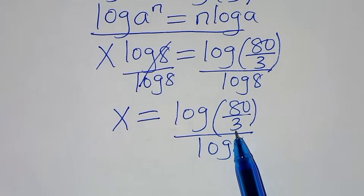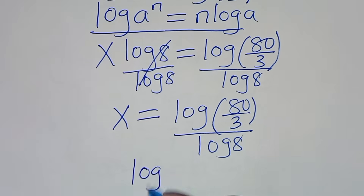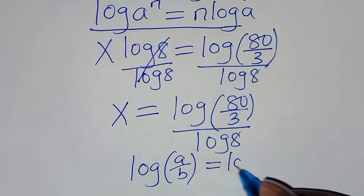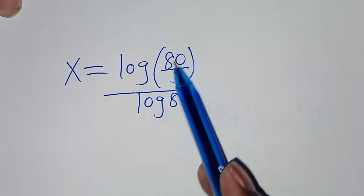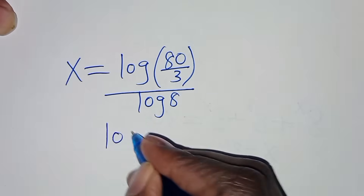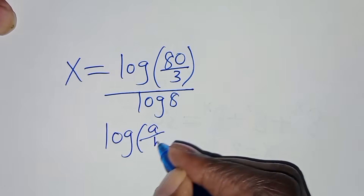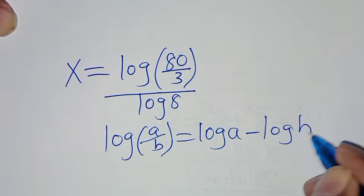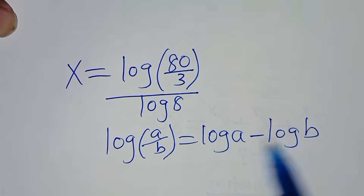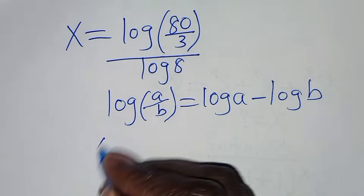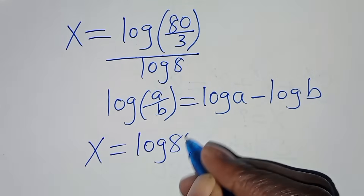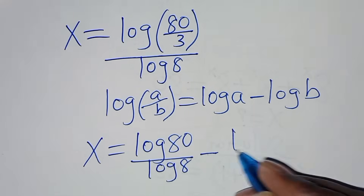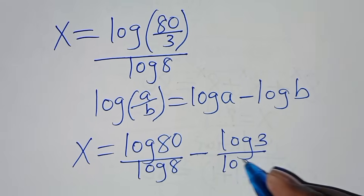Now, log(80/3) is in the form of log(a) divided by log(b), and log(80/3) over log(8) can be expanded. Applying the logarithm quotient property — log(a/b) equals log(a) subtract log(b) — we have x equals log(80) divided by log(8), subtract log(3) divided by log(8).